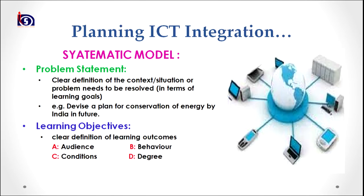The second stage in the systematic model is clearly chalking out the learning objectives. Learning objectives connote to the clear definition of learning outcomes, and there is an A, B, C, D model to be followed. A connotes to the audience — whom I am focusing on. B connotes to the behavior — what kind of change I am expecting in my learner. C connotes to the condition — what conditions are imposed on learning. D connotes to the degree — to what extent I need or am planning for the change in behavior.